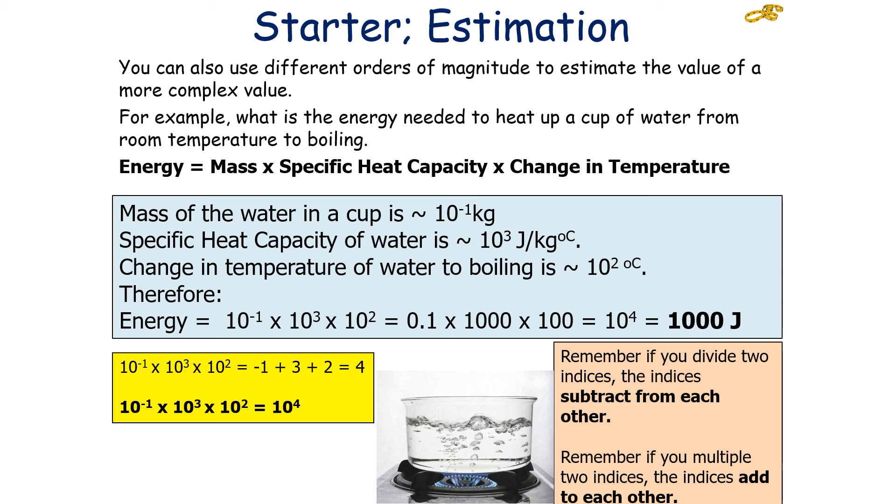It's 0.1 times by 1,000 times by 100, which if you're working through is going to be 10,000. Therefore, you would have 10 to the 4. It would be 10 to the minus 1, 10 to the 3, 10 to the 2. If you multiply in two indices, the indices add to each other. Minus 1 plus 3 plus 2 is going to be equal to 4. So, it's 10 to the 4.